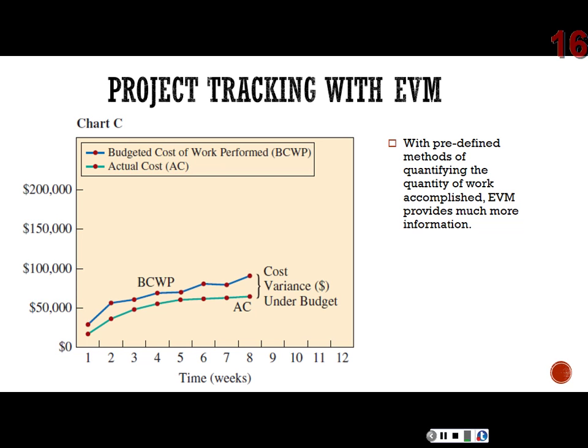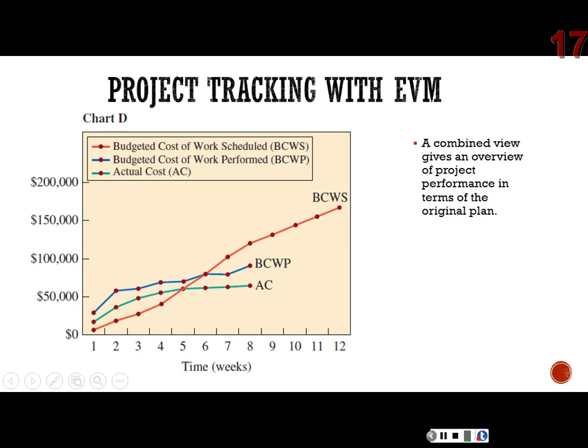Exhibit 5.5C shows budgeted cost of work performed and our actual cost. Our actual costs are under those budgeted costs of work performed, so we would see that as a positive variance. It does take a little bit to get your head around budgeted cost of work scheduled, budgeted cost of work performed, and the actual cost. We'll have some ratios to determine whether we have a favorable or unfavorable variance. The most informative chart has all three: budgeted cost of work scheduled, budgeted cost of work performed, and actual cost.